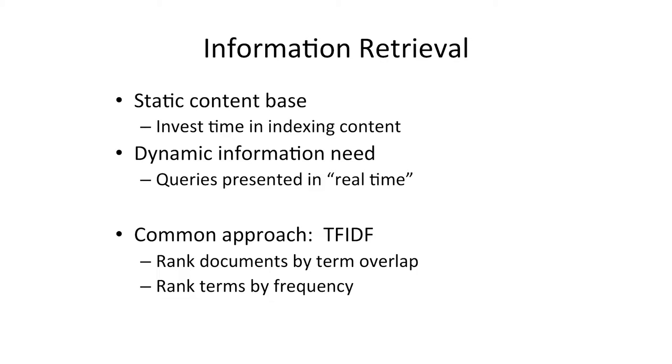Because of this balance, we spend our time indexing everything we can about that content base. We build up catalogs of the library. In the old days, we would have three different card catalogs — one by author, one by subject, one by title. We're going to learn one approach called TF-IDF, which ranks the documents — the books, articles, web pages — by how much they're about what we're looking for, while also ranking the terms by how good they are at discriminating among the different documents.